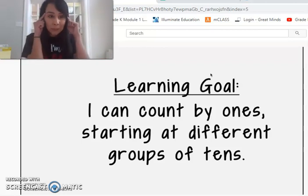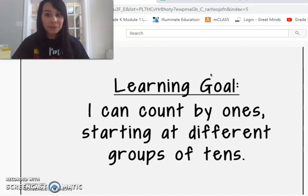And today we counted by one starting at different groups of 10. So that means that we are going to start at different numbers and follow our path. Okay. But we need to make sure that we're looking at our tens numbers so we don't get confused. Okay. I want you to think big. Let's put on our thinking hats and let's go on and let's do some real, some other big numbers.